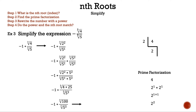So now we have negative one times the cube root of 100 over the cube root of five cubed. We can cancel the index and the power since they are the same number, and only the five remains. So now we have the negative of the cube root of 100 over five. That is example three.